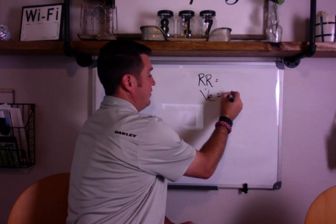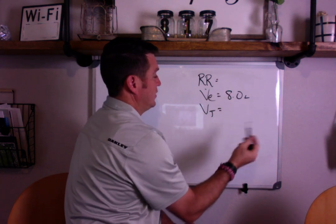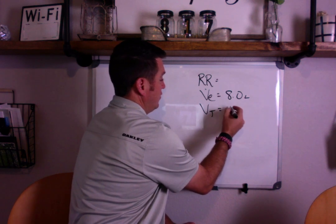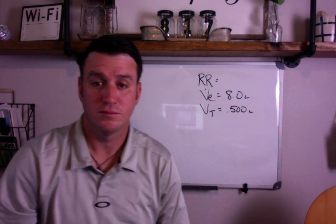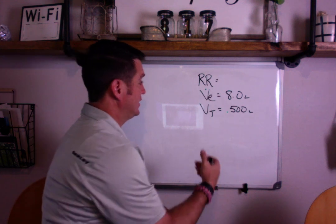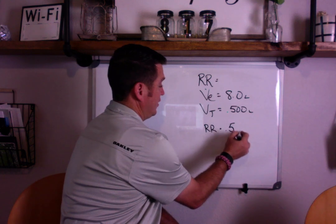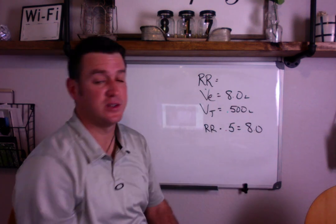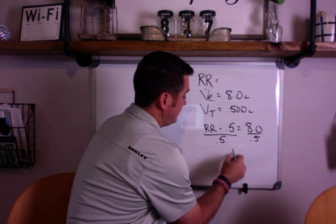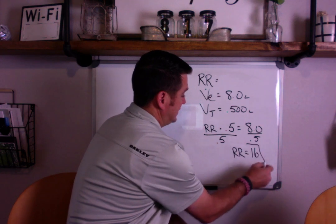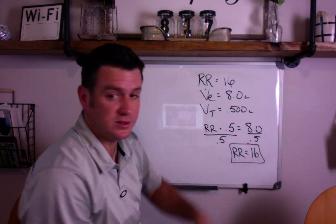Let's say we have a minute ventilation of 8 liters per minute, and the patient is breathing at tidal volume approximately 0.5 liters. So now, we're going to set this formula up the exact same way. Respiratory rate times tidal volume equals 8 liters. Divide both sides by 0.5, and our respiratory rate equals 16. 16 times 0.5 equals 8.